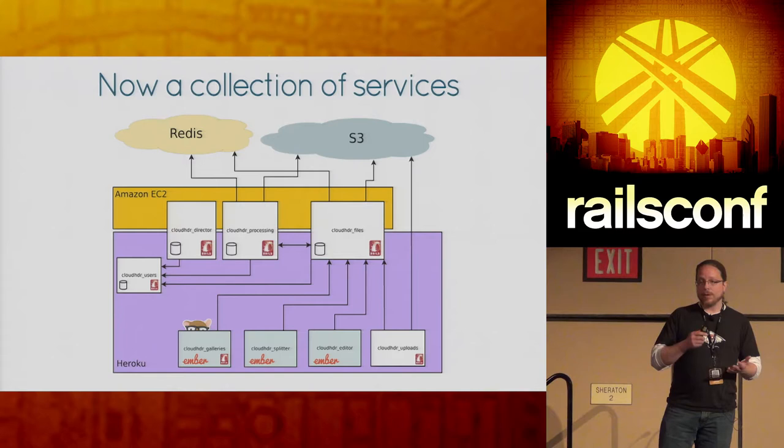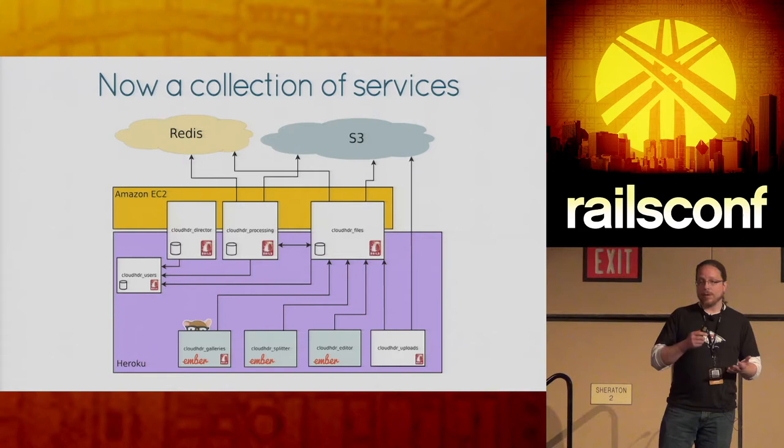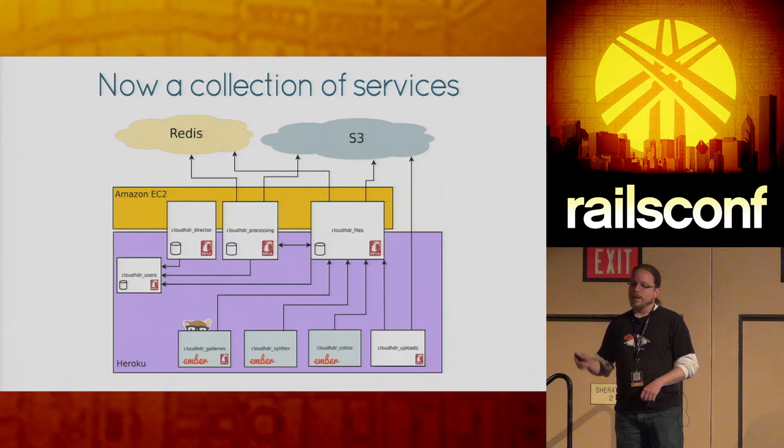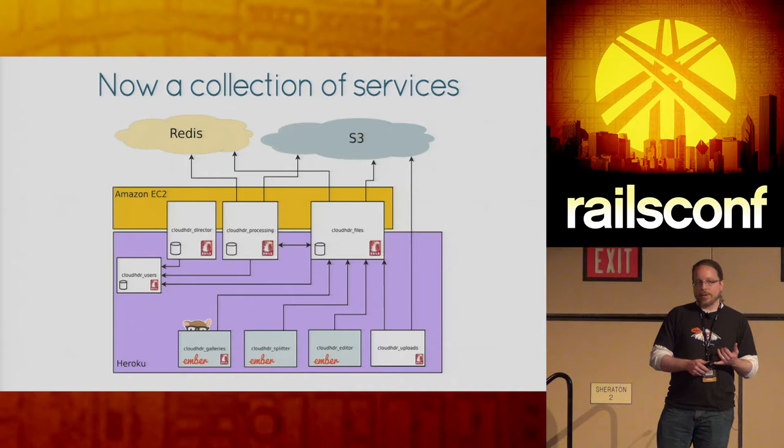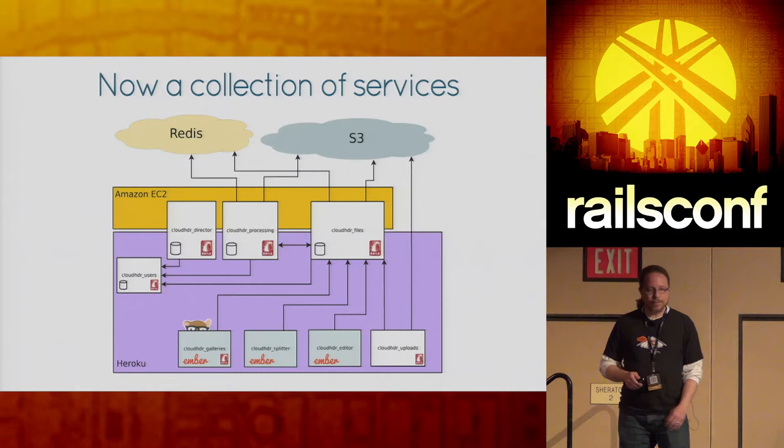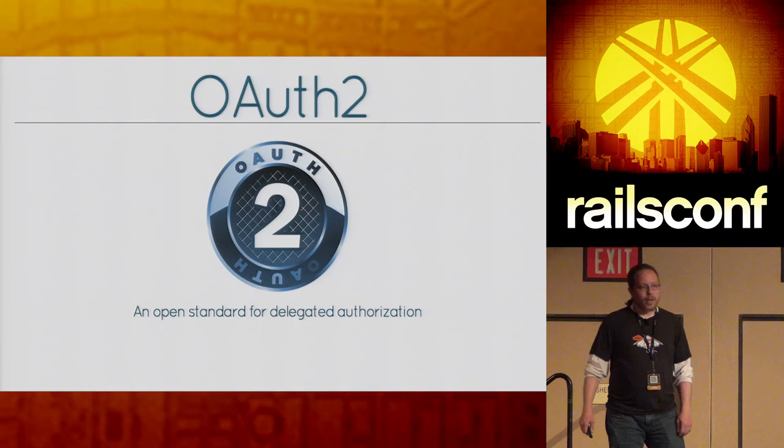I wanted something like you have at Amazon or Google. Both of those places have dozens of web properties you can log into, but for every one of them, anytime you log in, you end up at the same login page and then get sent back to wherever you were trying to go — whether you're buying something from Amazon's store or logging into AWS. So I wanted to replicate that.